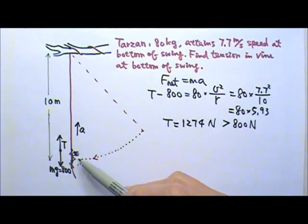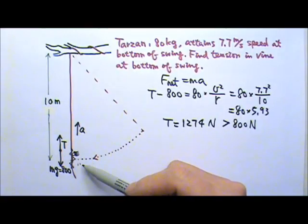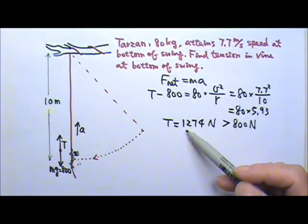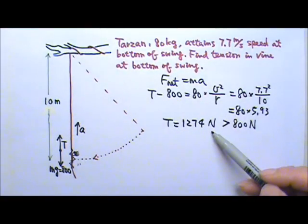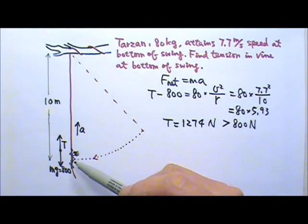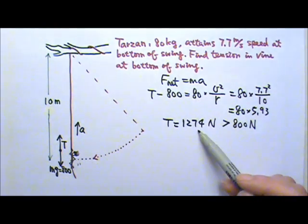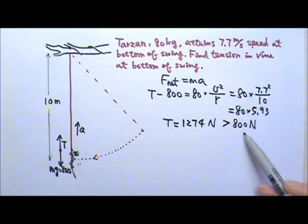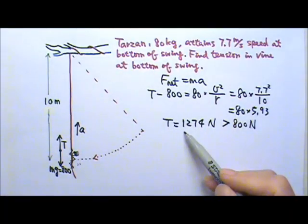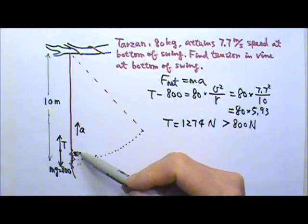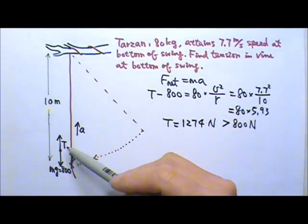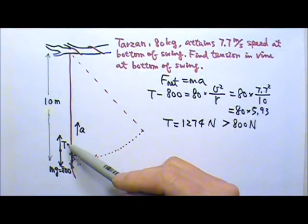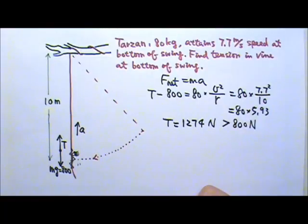Now this tension is also his apparent weight because he must be sinking down pulling down on the vine with that much force. So at that moment his apparent weight is heavier than his real weight. It has to be more than his real weight because he has an upward acceleration. The upward tension must be bigger than the downward real weight.